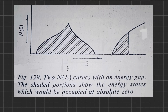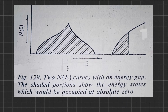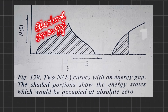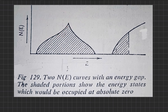Small N(E) curves give information about the distribution of electrons in various energy levels of a band. Now we can understand what capital or large N(E) curves mean. In small N(E) curves we plot distribution of electrons versus energy levels, whereas in large N(E) curves we plot two things: not only the distribution of electrons but also the presence of available energy levels. This information was missing in small N(E) curves, so large N(E) curves discuss both the distribution of electrons and the distribution of energy levels.